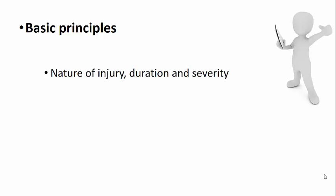Now let's understand the mechanisms of cell injury — the pathogenesis of cell injury. The basic principles are: first, the cell response to injury depends on the nature of injury, the duration, and the severity of the injurious agent. A shorter duration causes less injury, while a longer and persistent duration results in much more injury. If the injurious agent is in a milder form, there could be lesser damage; if it is more severe, you can expect more damage.